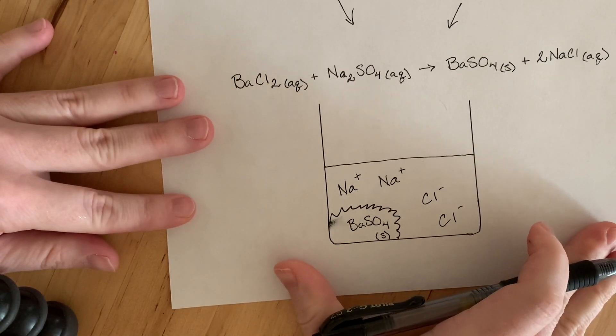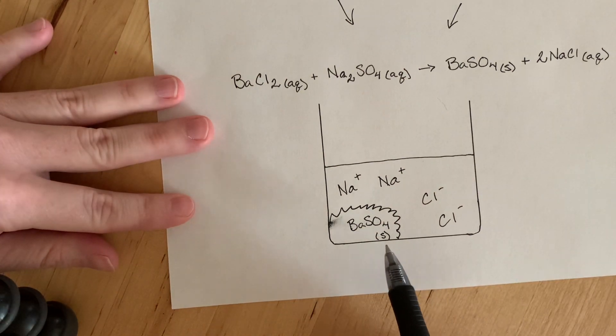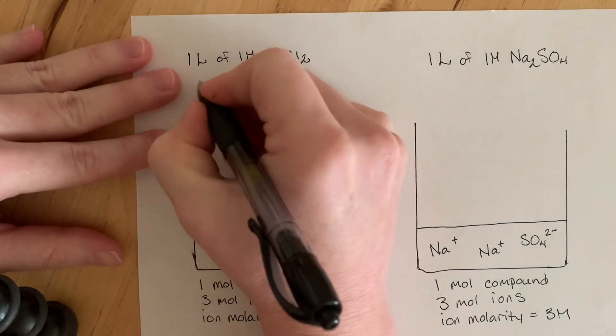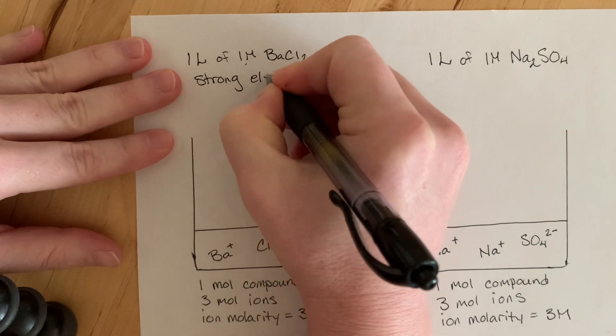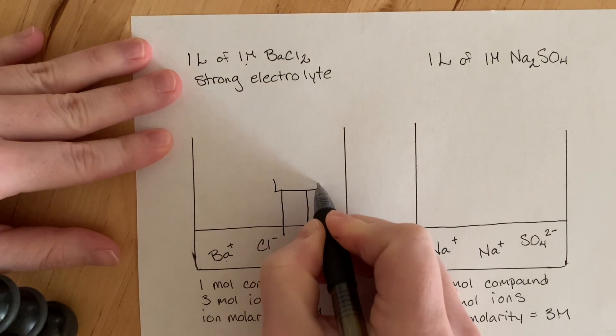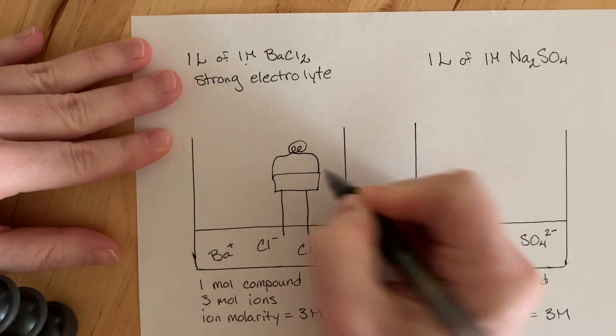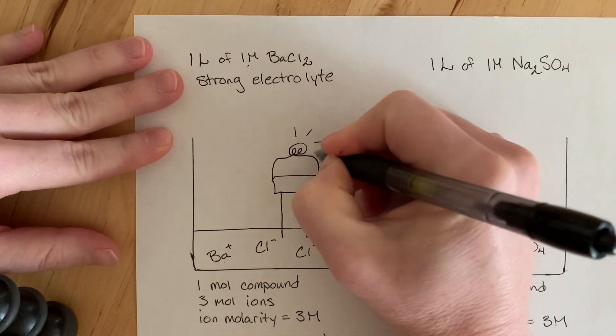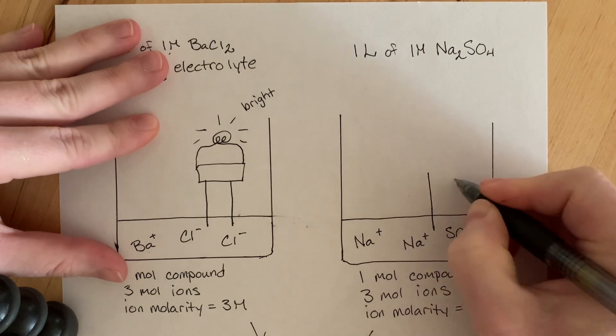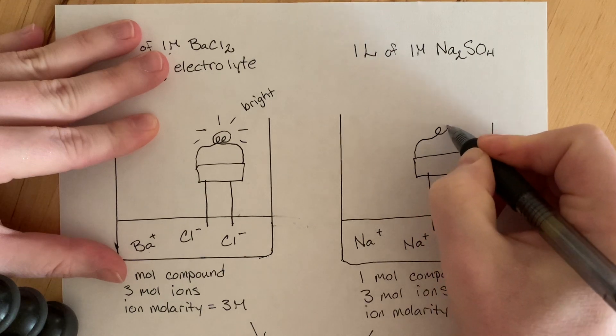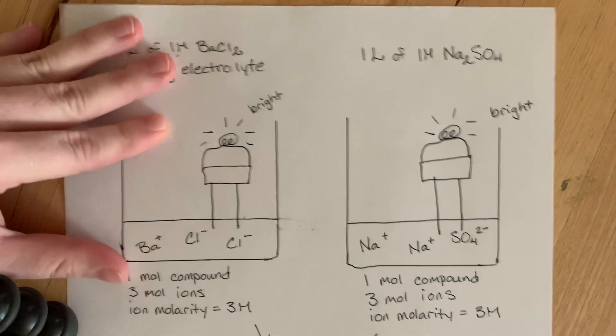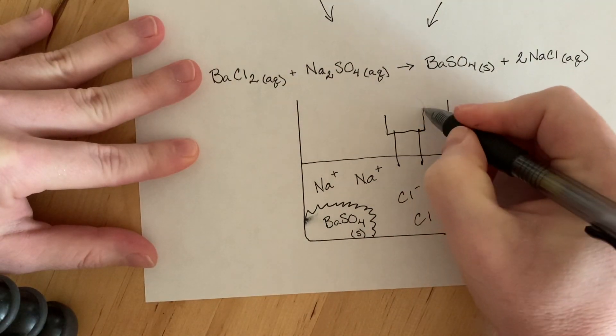So the following questions will be about predicting the conductivity behavior of this solution right here. Up here, we have a decent concentration of strong electrolyte. So if we have our conductivity apparatus in that solution, the light's going to be bright. Same thing with this one. Your job is to predict what happens here.